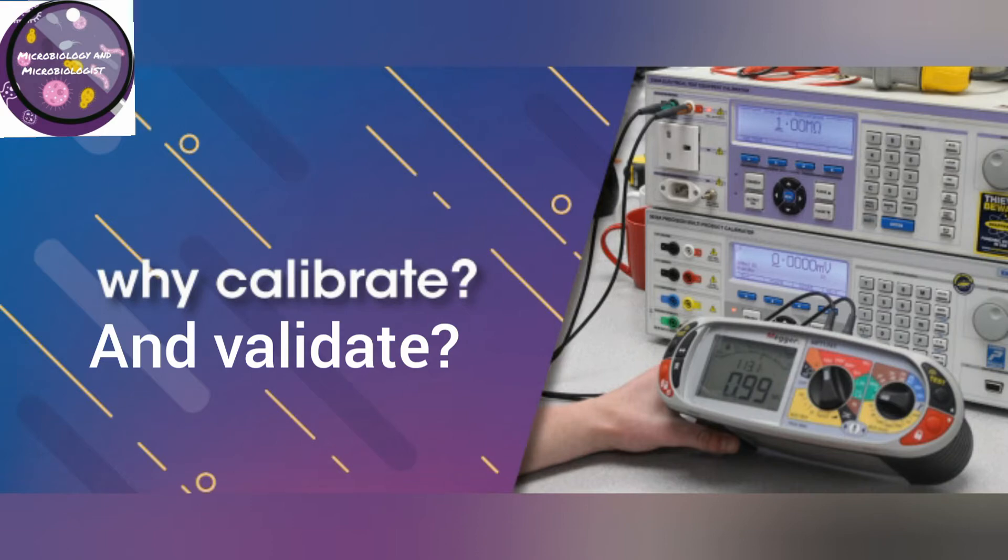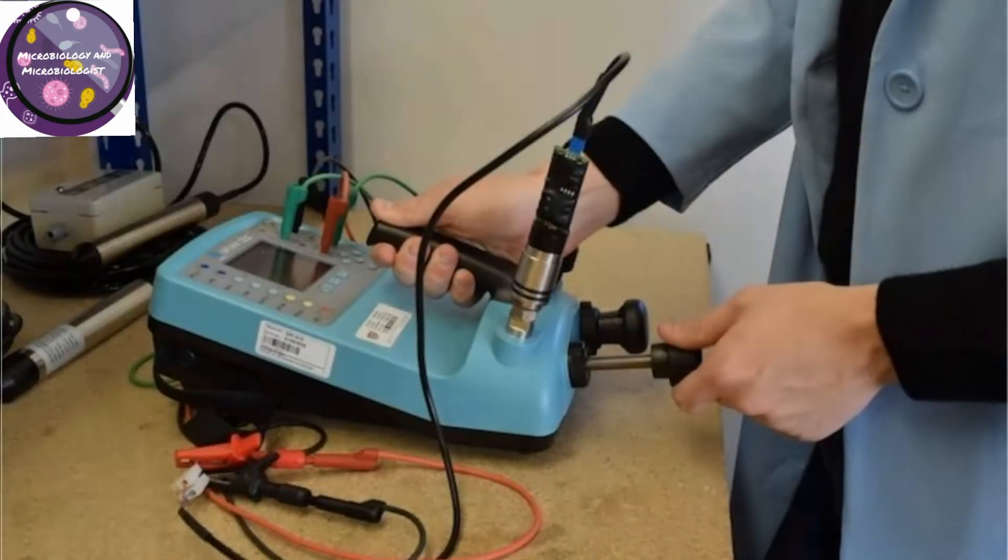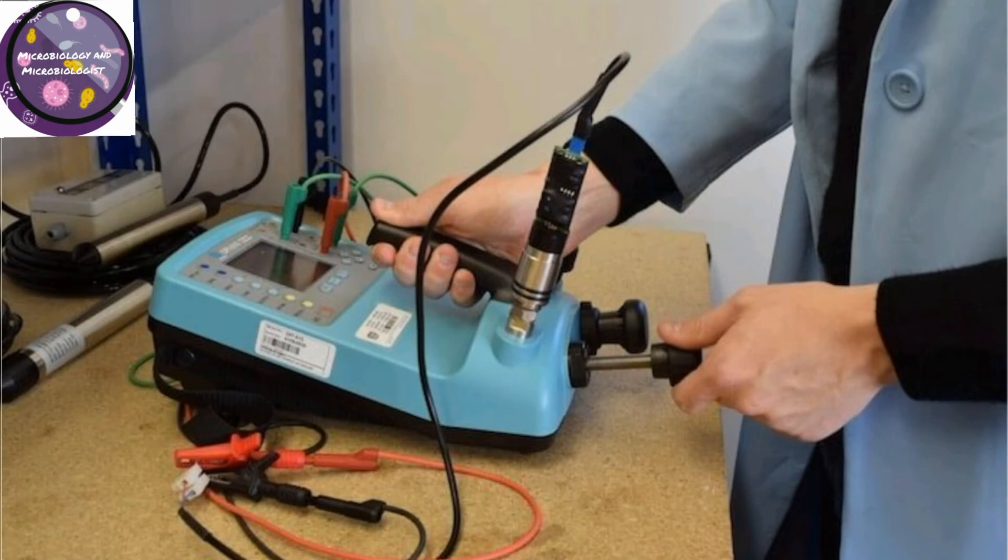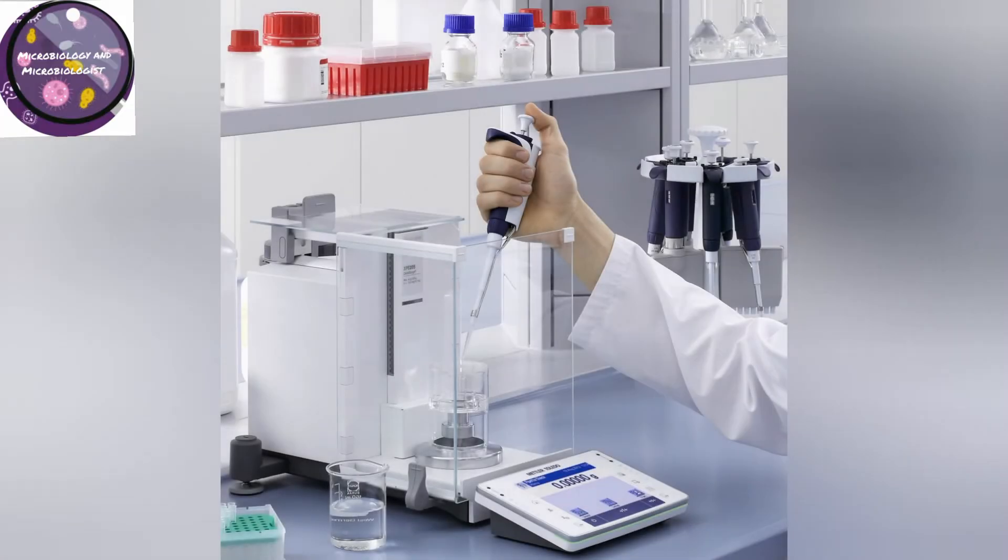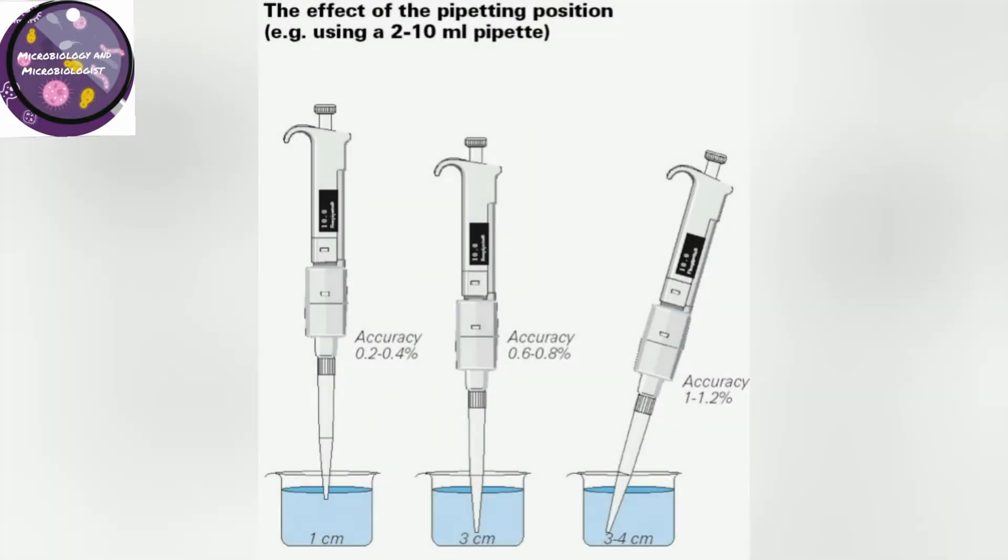Maintaining calibrated and validated equipment or instrument or process is fundamental to guarantee quality. Calibration is different from validation and validation is different from calibration as validation doesn't require comparisons with a standard reference material.